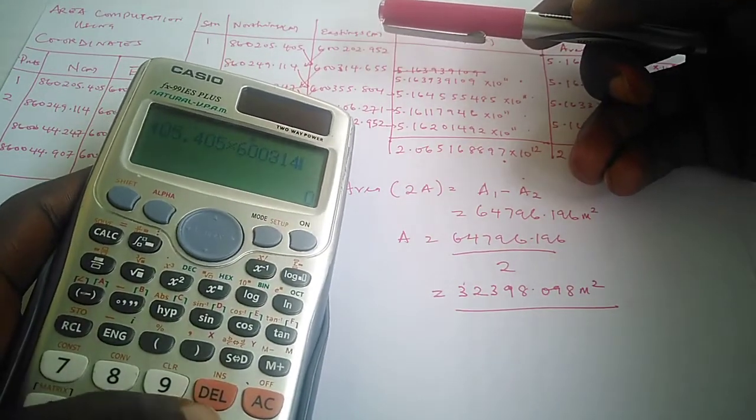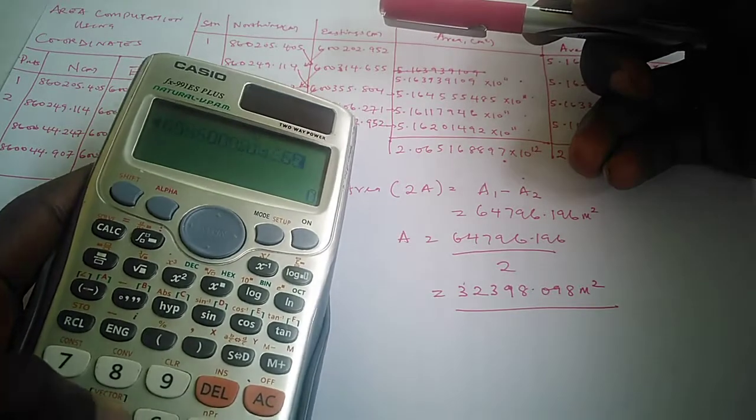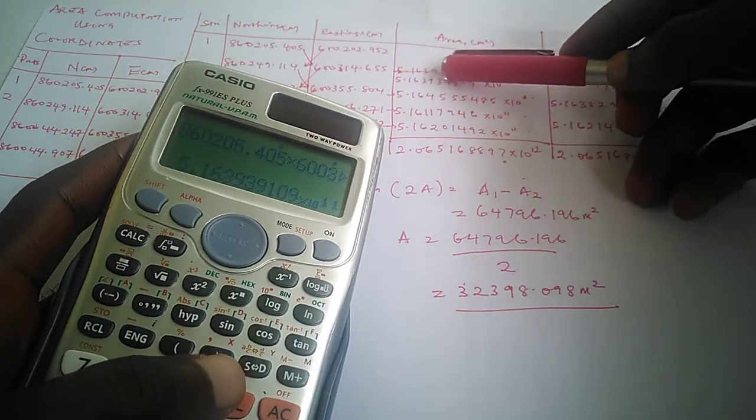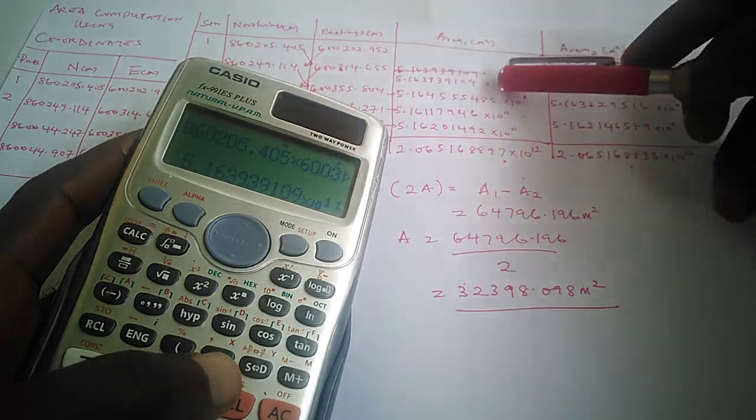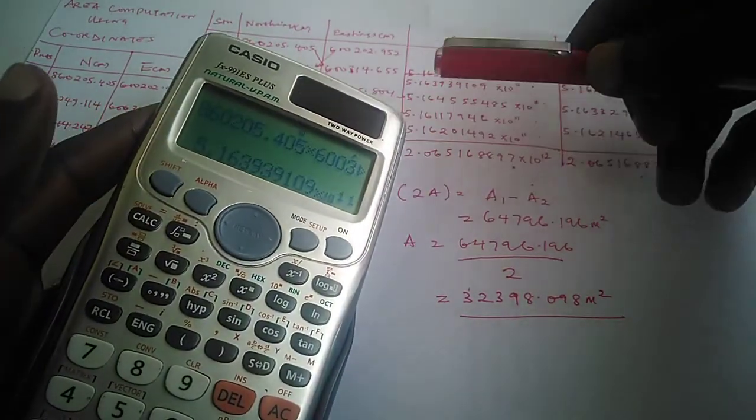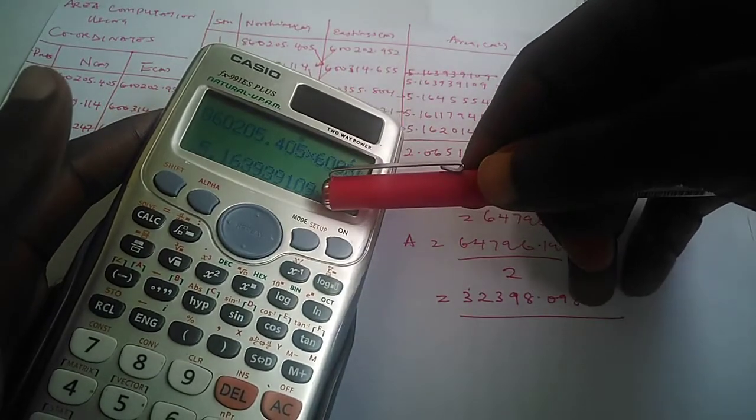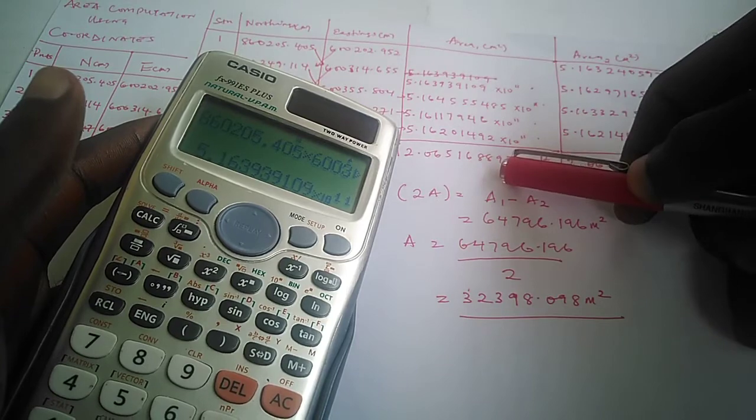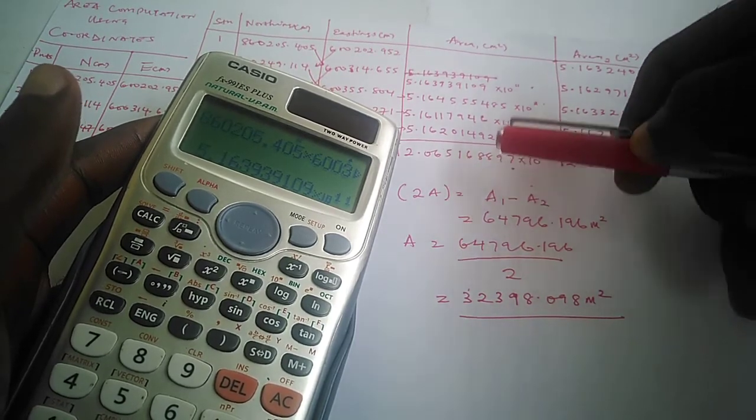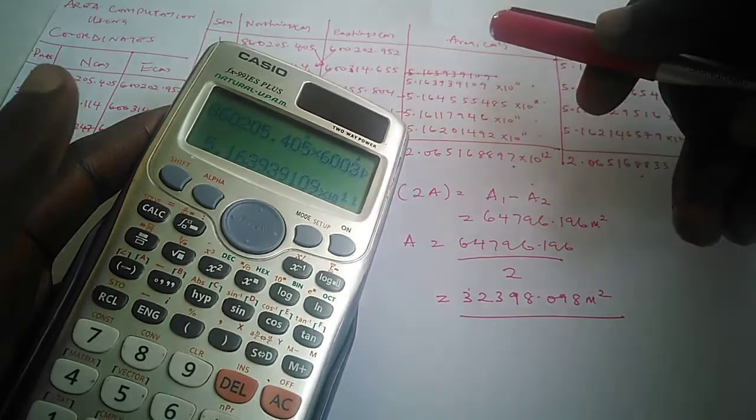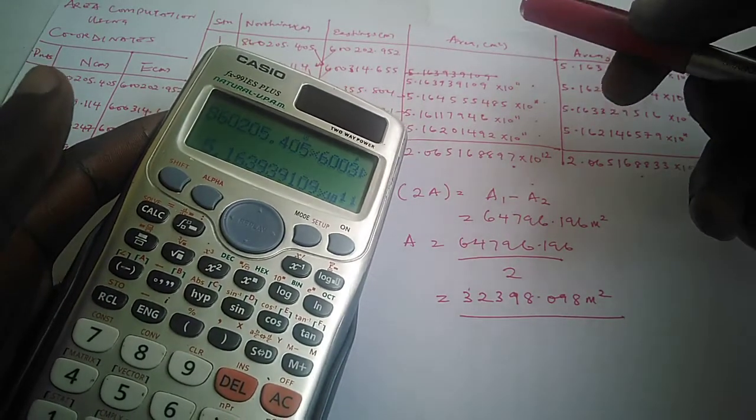For instance, let's take this first value as an example. We have 205.405 multiplied by the second easting, which is 600314.655. We have something like 5.163939109 times 10 raised by 11. By the time you continue your multiplication, you'll be having very large numbers like this.